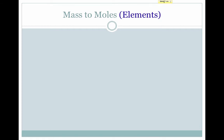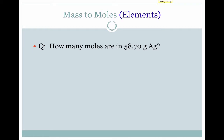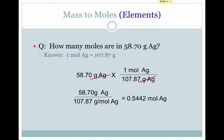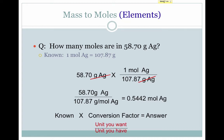We can also go in the other direction. Consider this: you are asked how many moles are in 58.70 grams of selenium. We know that one mole of selenium has a mass of 107.87 grams. So we multiply the given by our conversion factor, cancel our grams, and we end up with 0.5442 moles of selenium.